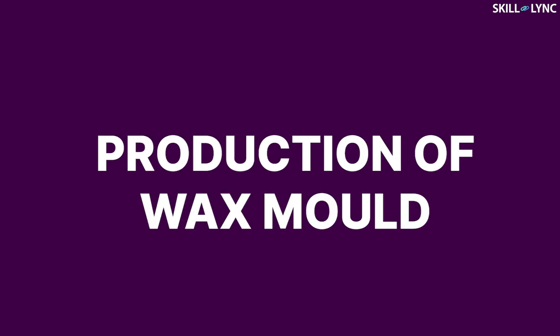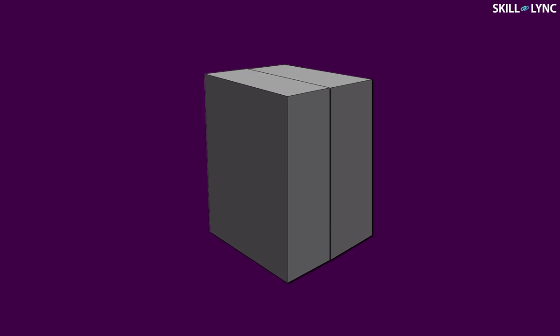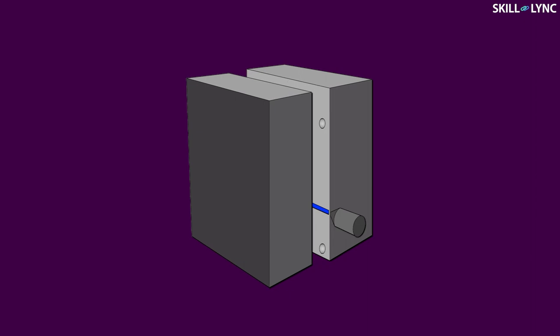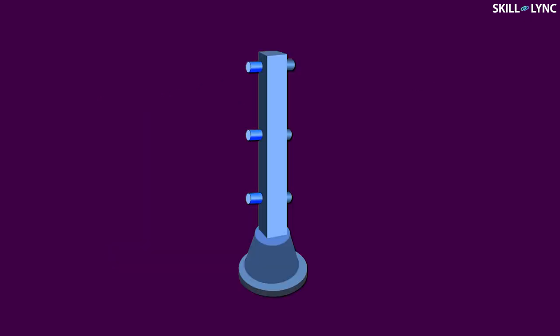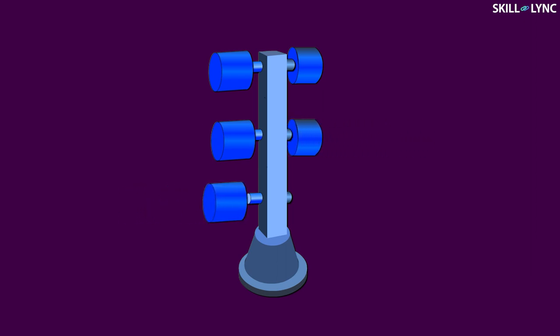The investment casting process starts with the production of a wax mold. This wax mold is produced by filling a special mold created to manufacture wax patterns, which has the shape of the required wax pattern. As the wax pattern is manufactured, it is placed into a pattern tree which consists of several other wax patterns. The pattern tree employs gated systems which are essential in filling all the mold cavities with molten metal simultaneously.